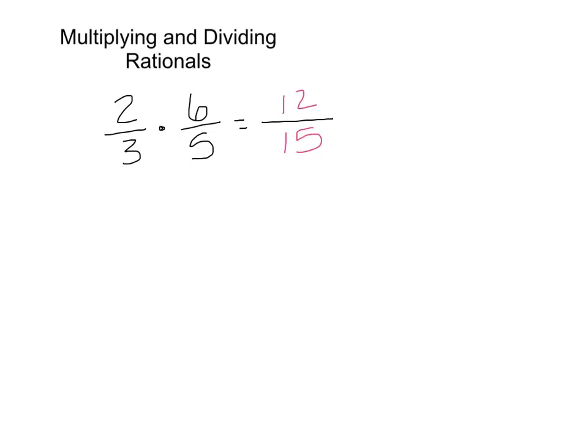That's not actually simplified. We have to cancel out any common factors that we have. So if we look at 12 and 15, we know that both of them are divisible by 3. So I'm going to factor this with 3: I have 3 times 4, and I have 3 times 5. Now we can cancel out our common factor of 3, and we're left with our final answer of 4 over 5.